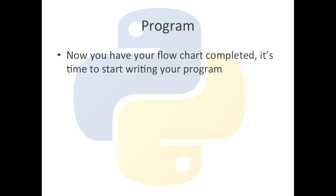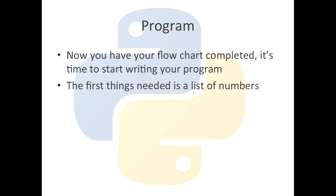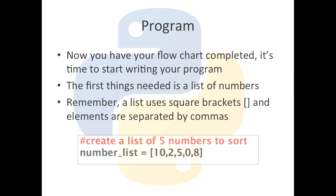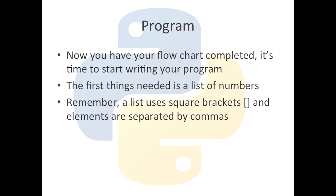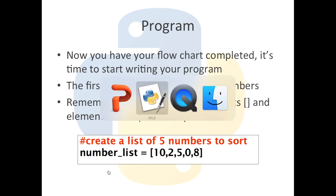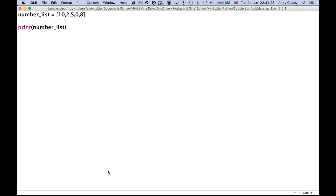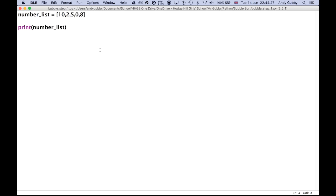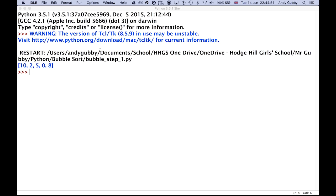Now you've got your flowchart, it's time to start writing your program. First you need a list of numbers — remember, a list uses square brackets and elements are separated by commas. In Python I've created a list called number_list with five elements: 10, 2, 5, 0 and 8. It's good practice to add a comment so others know what the program is doing. I'm then printing the number_list to check the numbers are stored correctly, and when we run the program we can see it works.